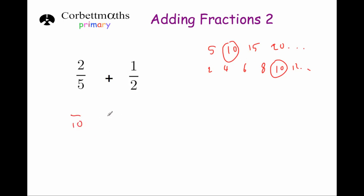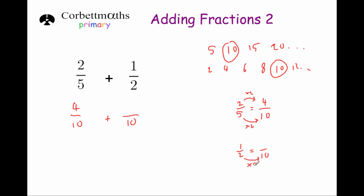We're going to make this something over ten plus something over ten. With two fifths, we want to change that to have a ten on the denominator. To get from five to ten, we multiply by two, so we multiply the numerator by two as well: two times two is four. So two fifths is the same as four over ten. For a half, to get from two to ten we multiply by five, so one times five is five — a half is the same as five tenths. Adding four tenths and five tenths gives us nine tenths. So two fifths plus a half is nine tenths. Just write down the multiples of both denominators, find the lowest common multiple, make that the new denominator, find your two equivalent fractions, and add them together.